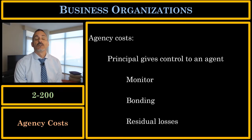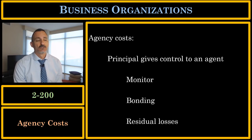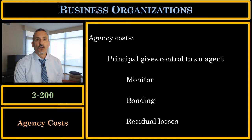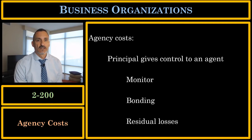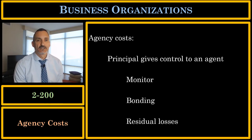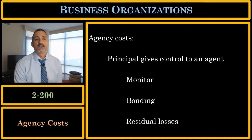The final category of agency costs are the costs of residual losses. No matter how much monitoring the principal does or how much the agent invests in bonding, there are going to be times where the agent shirks and costs money to the principal. No matter how much monitoring, there are going to be times where the agent does not act diligently and does not act honestly. These costs are called residual losses.